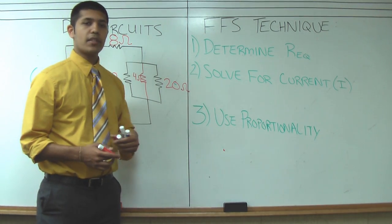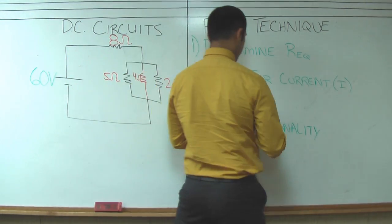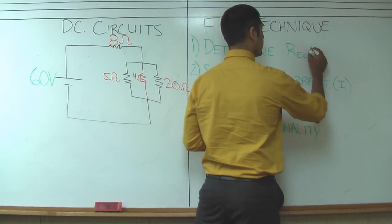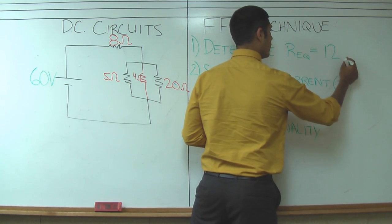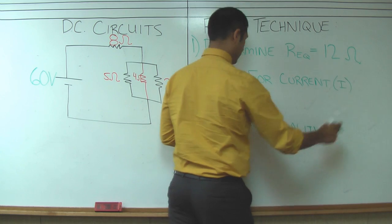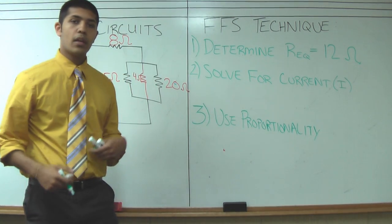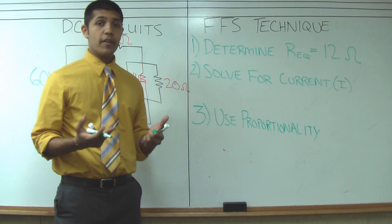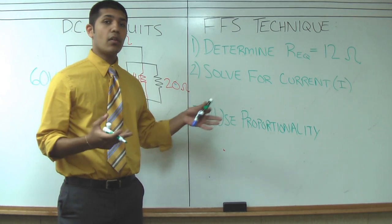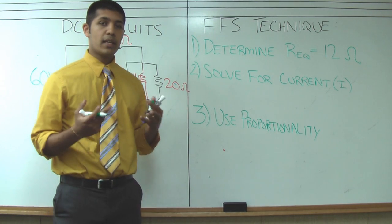So the equivalent resistance for this circuit is 12 ohms. Alright, so that's really our first step. For all circuits we have to know what all the resistors combine into.